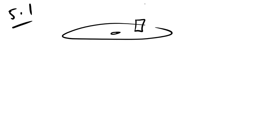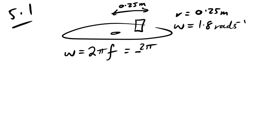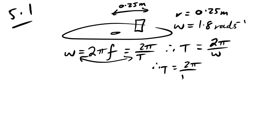Question 5: circular motion with a block at radius 0.25 m and angular speed 1.8 rad/s. The time for one revolution: T = 2π/ω = 2π/1.8 ≈ 3.5 seconds.